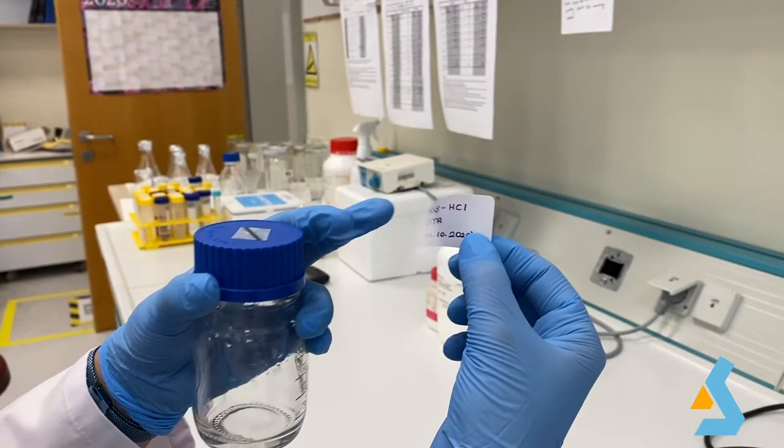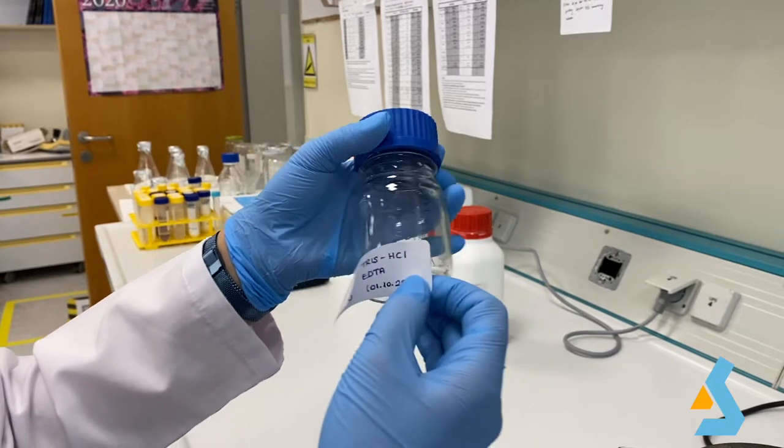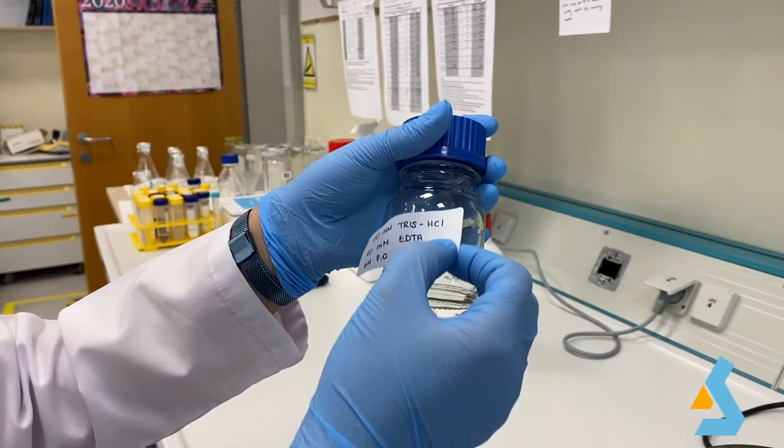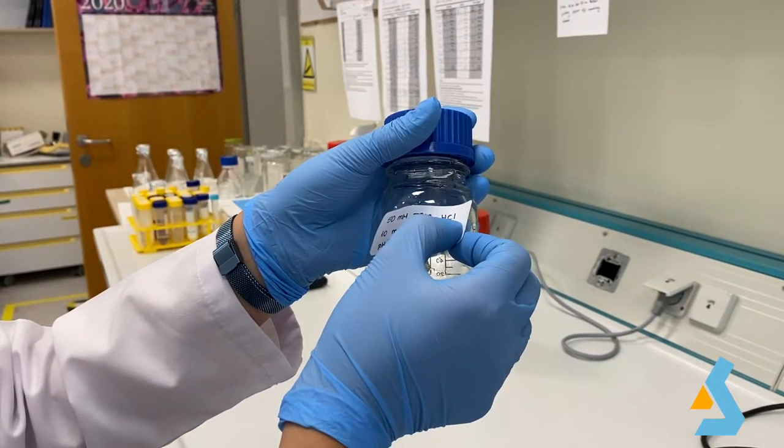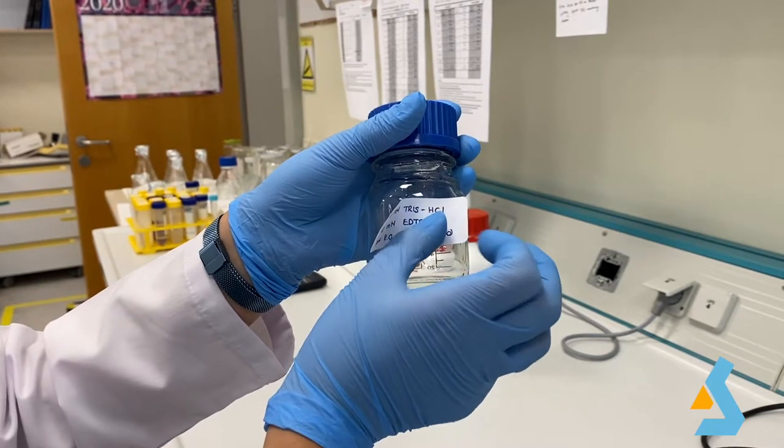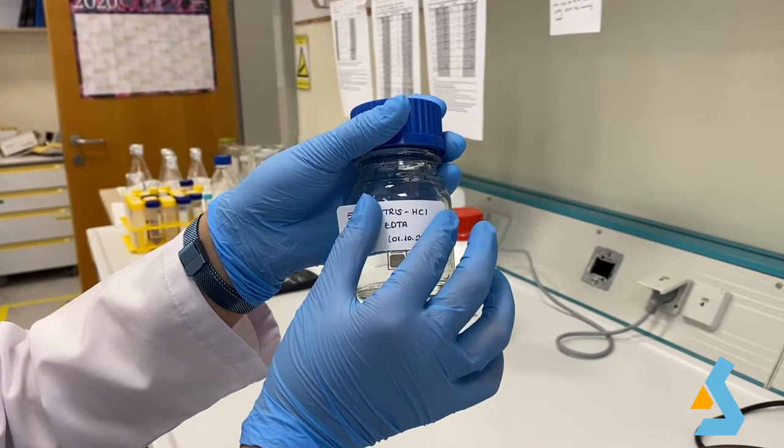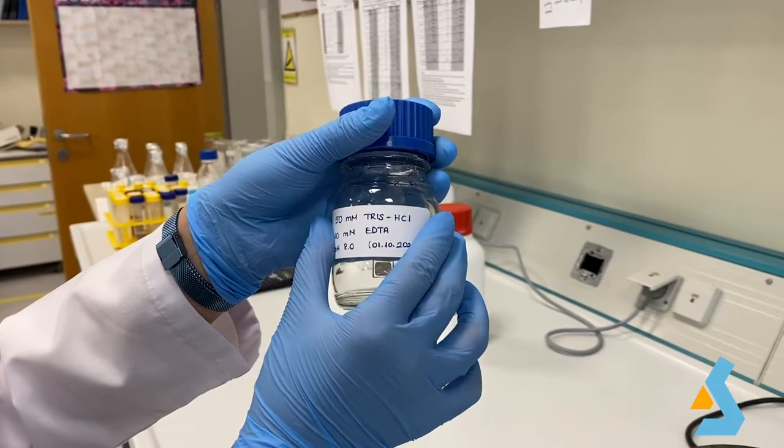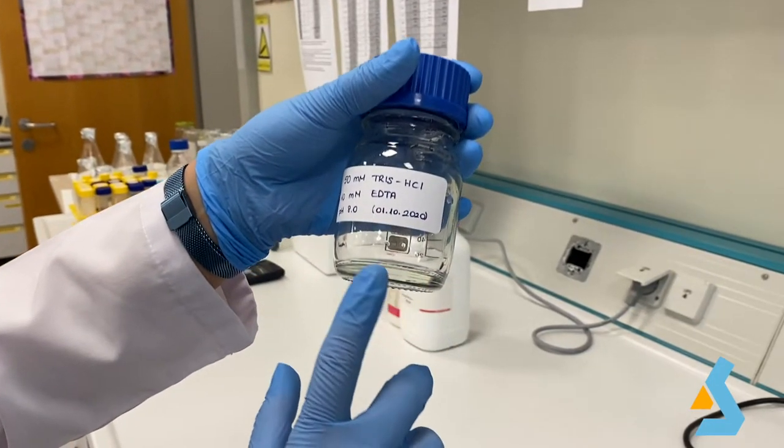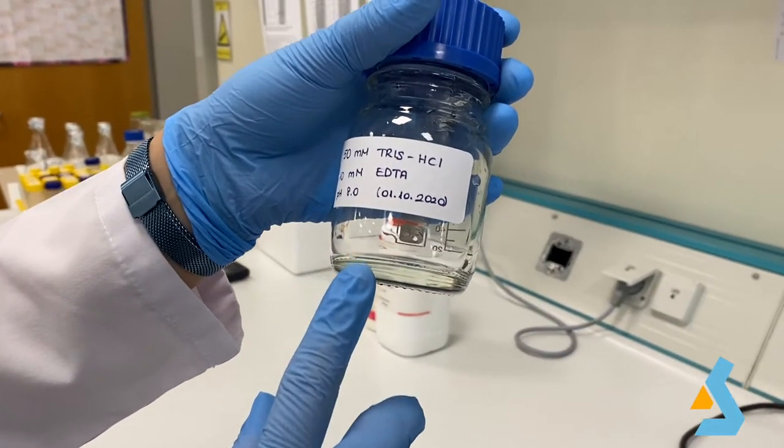For this video, we are going to prepare Tris EDTA TE buffer, which is a slightly basic solution with a pH of 8. It's a major constituent of DNA extraction buffer and it helps the lysis of cell wall and nuclear membrane. TE buffer is also a DNA preservative which stores DNA in intact form for a longer period of time without degrading it.